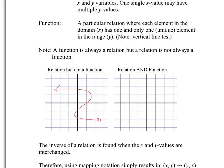A relationship that is also a function looks like this: for every single value of x, there is only one value of y. So for x equals 2, there's one value of y; for x equals negative 1, there's one value of y, and so on. Those are just two examples — there's an infinite number of graphs you could draw for both.